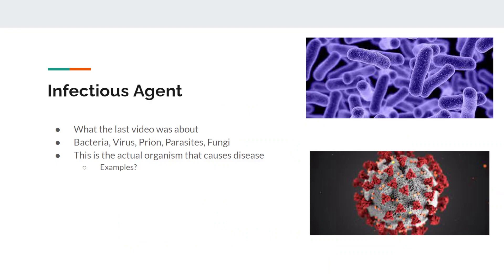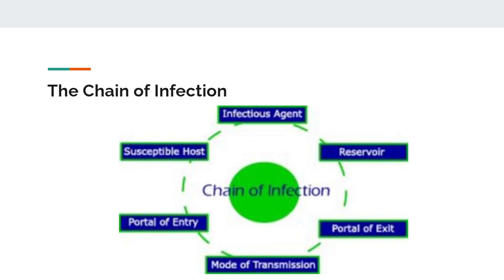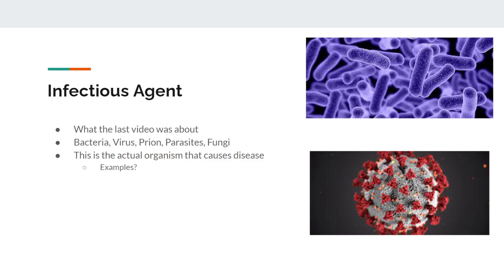You can start the chain of infection at any link, but we'll start at infectious agent. The infectious agent is what we talked about in the last video — those types of pathogens: bacteria, virus, prion, parasites, and fungi. These are the actual things causing the disease. Pause the video and name as many infectious agents from as many of these categories as possible. When you're ready to hear some examples, click play.